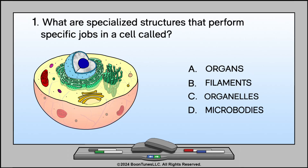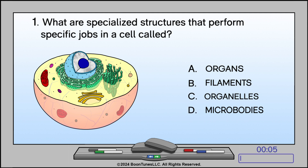What are specialized structures that perform specific jobs in a cell called? A. Organs, B. Filaments, C. Organelles, or D. Microbodies? The answer is C. Organelles.